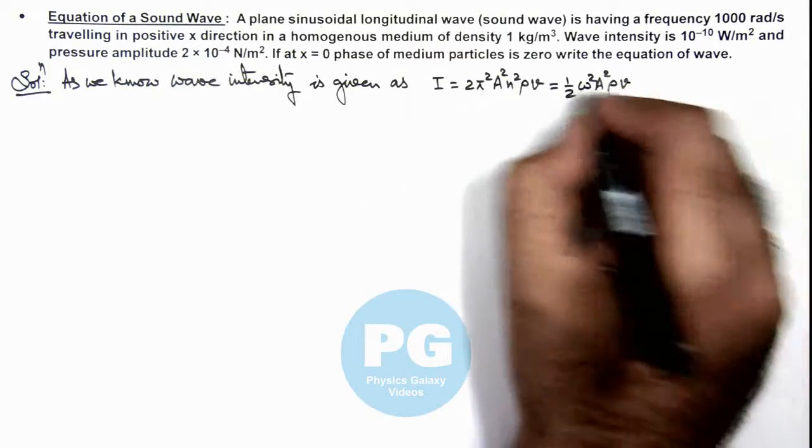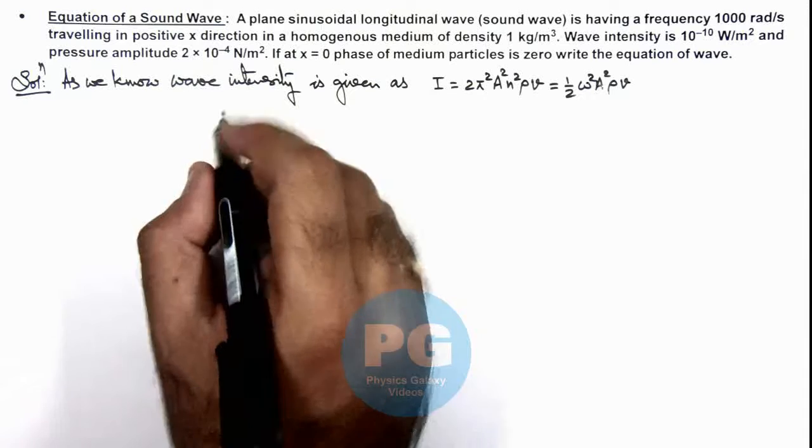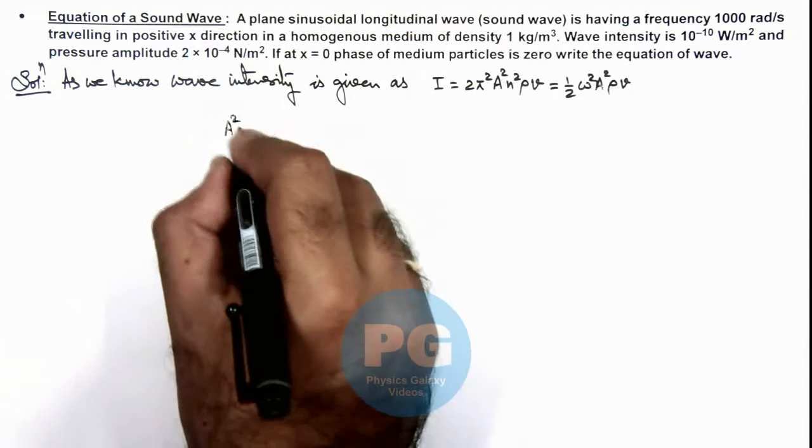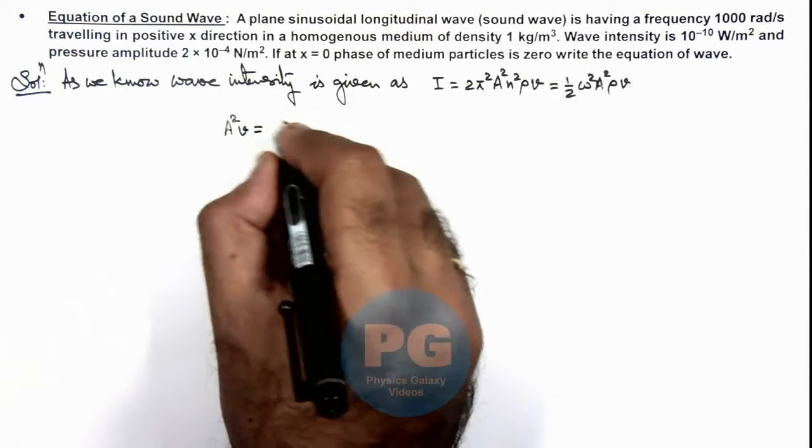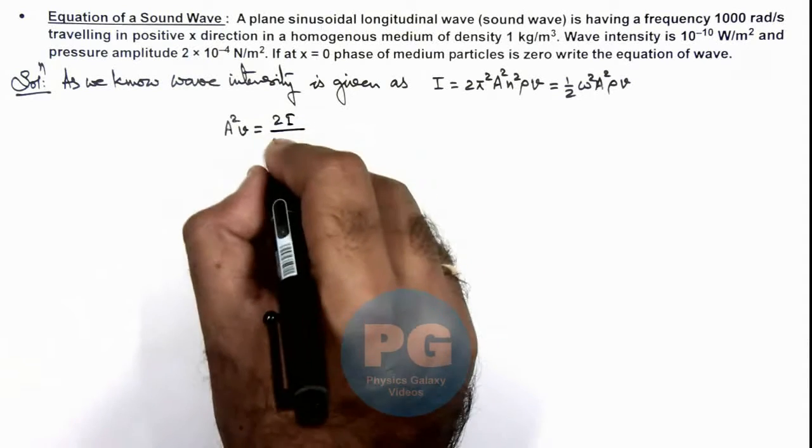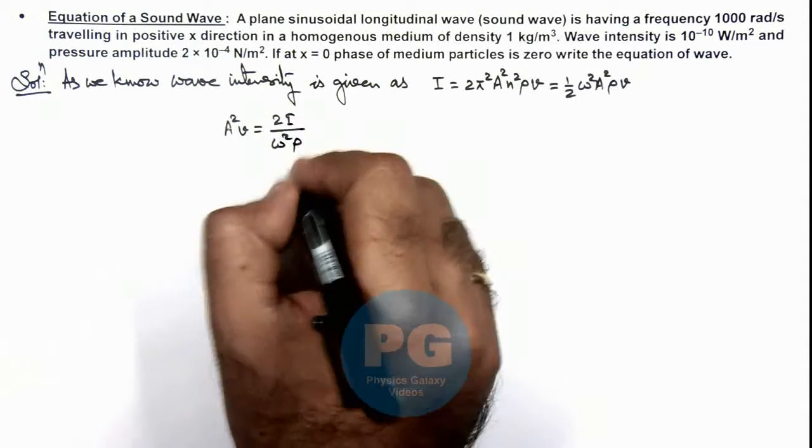So from this expression if we calculate the value of A²v, this is given as 2I divided by ω²ρ, all of which are given here.